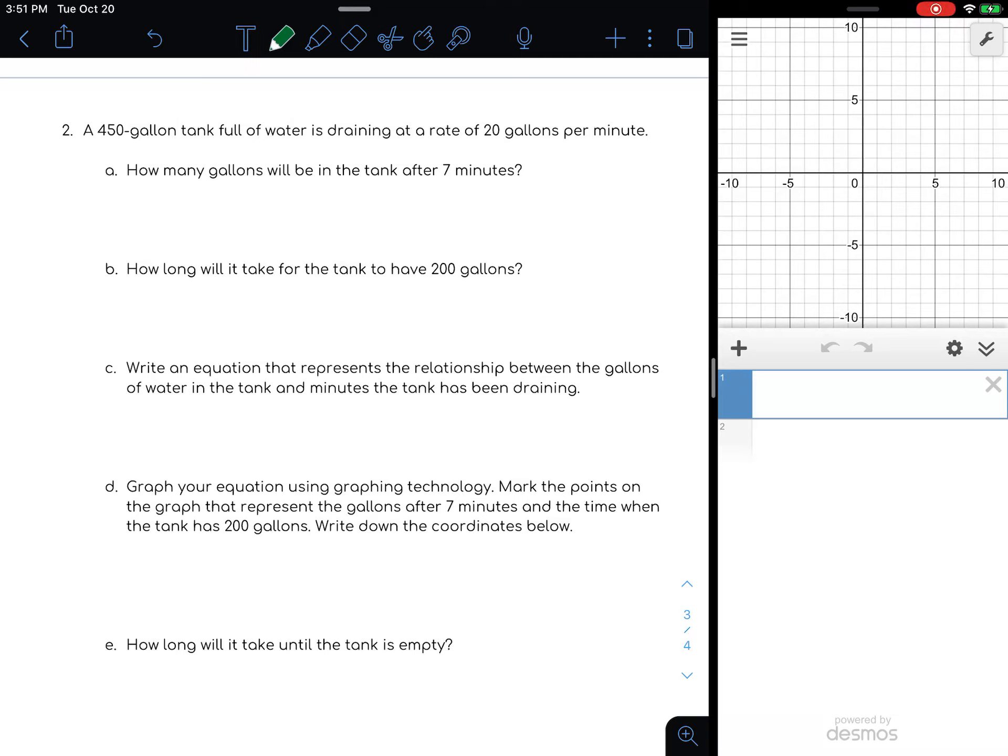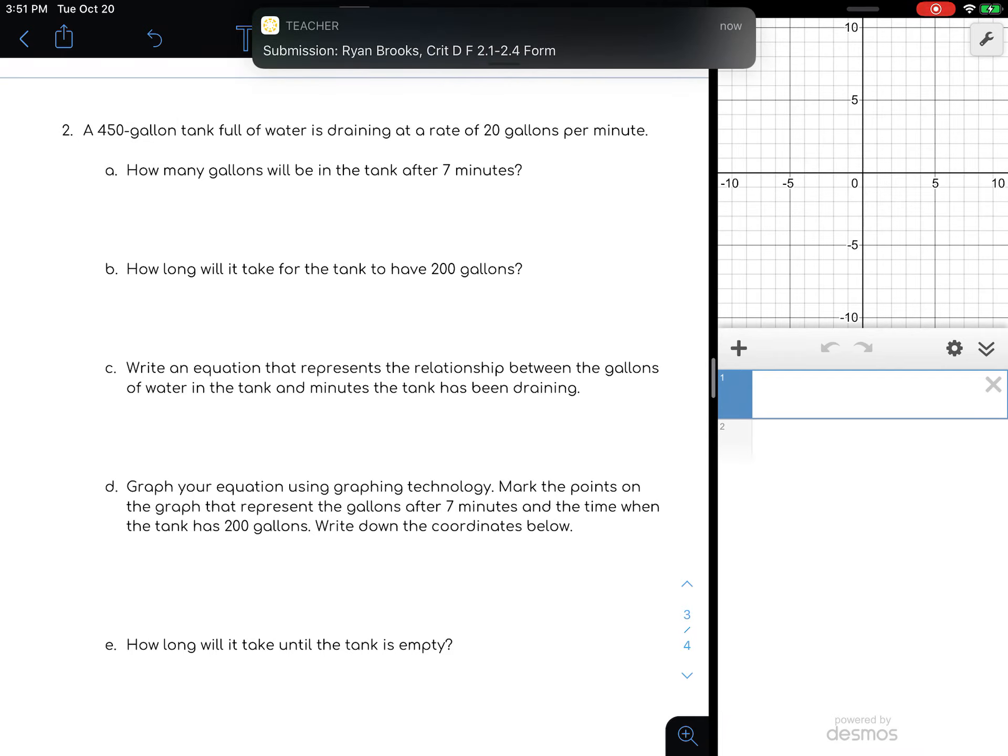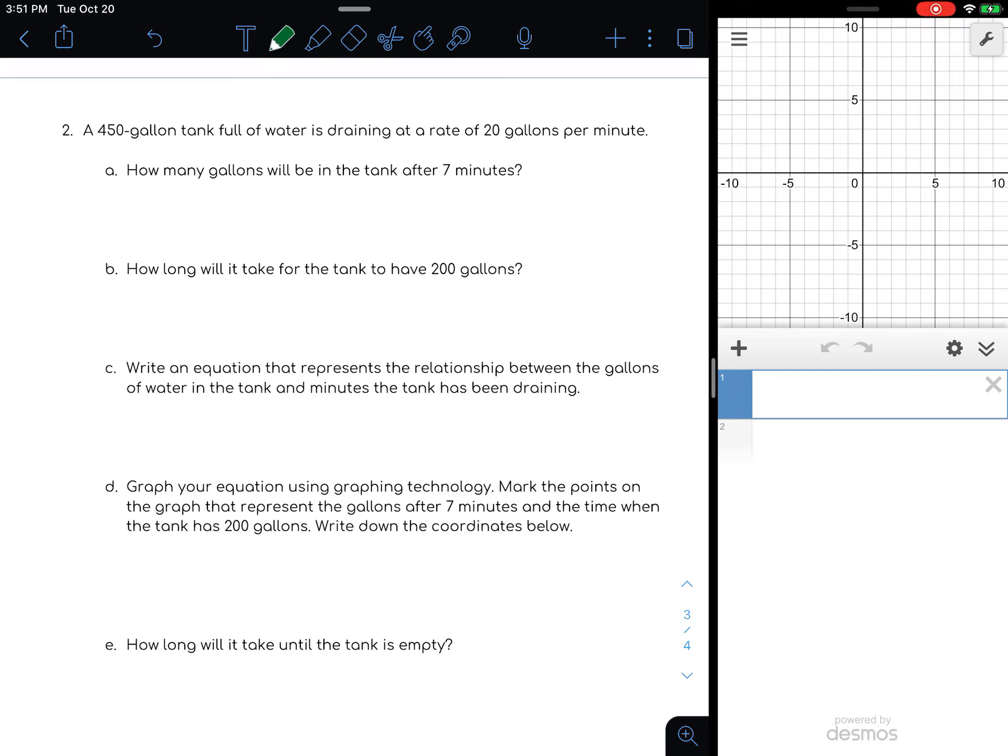Alright, the next problem. We're hoping you're trying on your own first with Desmos and then come back and check your answers to see how you're doing. You'll notice there's going to be some similarities to what we talked about in the last problem. So a 450-gallon tank full of water is draining at a rate of 20 gallons per minute. How many gallons will be in the tank after 7 minutes?